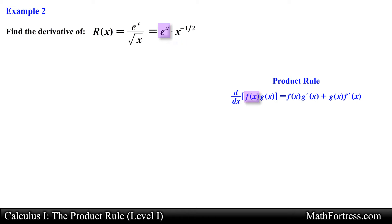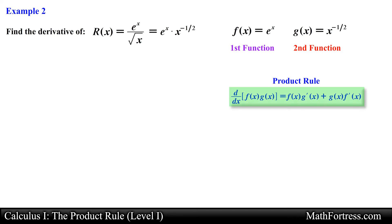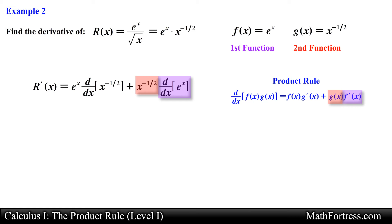Now we can go ahead and apply the product rule. I will assign e to the power of x as my f of x, the first function, and assign x raised to the power of negative one half as my g of x, the second function. Remember it really does not matter which function you assign as your f of x and your g of x. As long as you are consistent with the product rule everything will work out. Applying the product rule we obtain the following expression: the first function times the derivative of the second function plus the second function times the derivative of the first function.